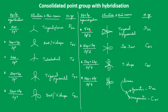If five bond pairs are there, the hybridization is SP3D and the base structure will be trigonal bipyramidal — that is the D3H point group. In this, if one lone pair is there, the structure changes to a seesaw shape, and the point group is C2V.